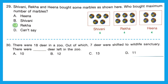Question 30: There were 18 deer in a zoo. Out of these, 7 deer were shifted to a wildlife sanctuary. The number of deer left is found by subtraction: 18 minus 7 equals 11. The correct option is option D, 11.